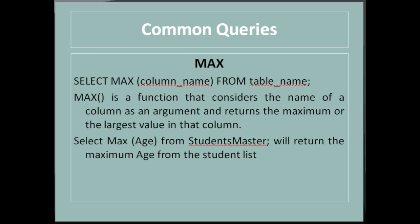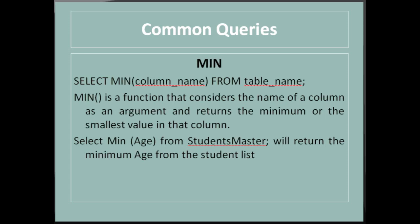Next is MAX: 'SELECT MAX(column_name) FROM table_name'. MAX is a function that takes the name of a column as an argument and returns the largest value in that column. For example, 'SELECT MAX(age) FROM student_master' will return the maximum age of the students. Next is MIN: 'SELECT MIN(column_name) FROM table_name'. MIN returns the minimum or smallest value of the specified column. For example, 'SELECT MIN(age) FROM student_master' will return the minimum age from the students list.